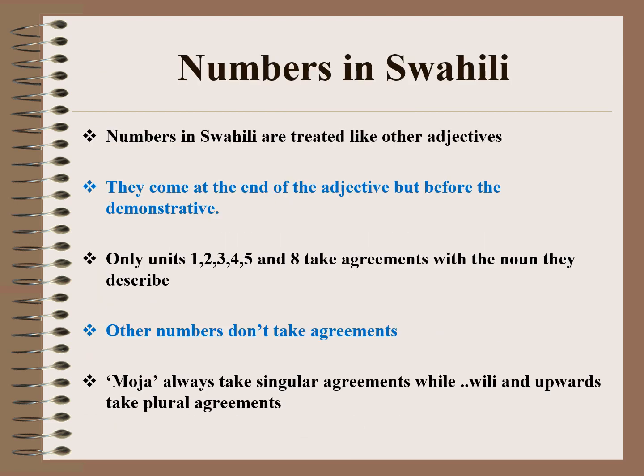Numbers in Swahili are treated like other adjectives. They come at the end of the adjective, but before the demonstrative. Only units 1, 2, 3, 4, 5, and 8 take agreements with the noun they describe. Other numbers don't take agreements. Moja always takes singular agreements, while wili and upwards take plural agreements.